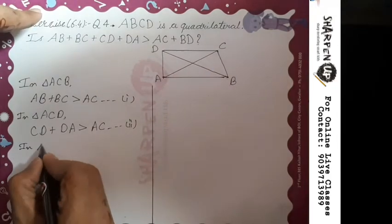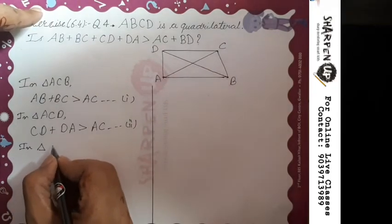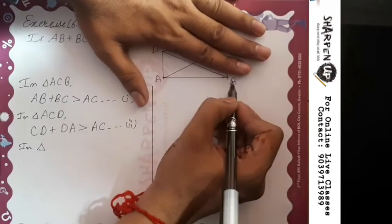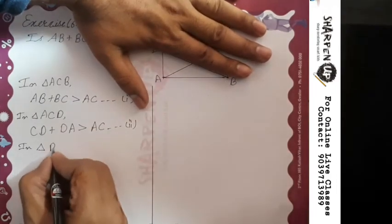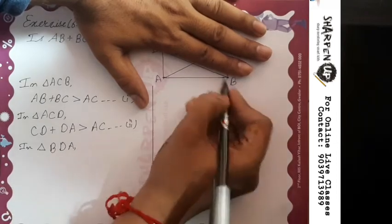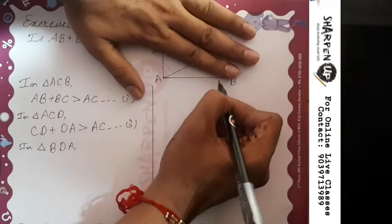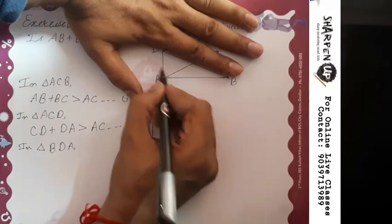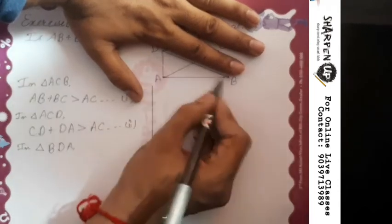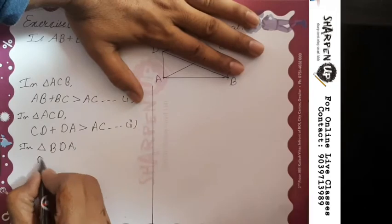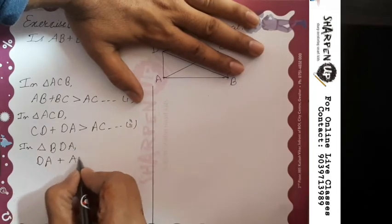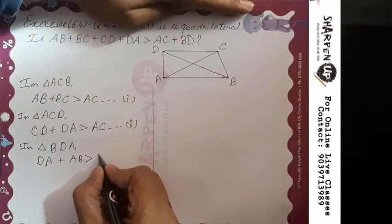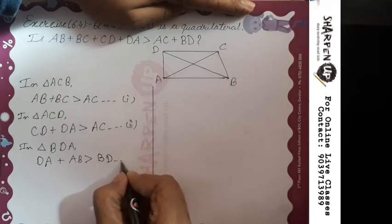Now take our third triangle. Taking B as a vertex and hiding the upper part gives triangle BDA. Adding sides DA plus AB, the sum is greater than third side BD. So DA plus AB is greater than BD. Let's name this expression three.